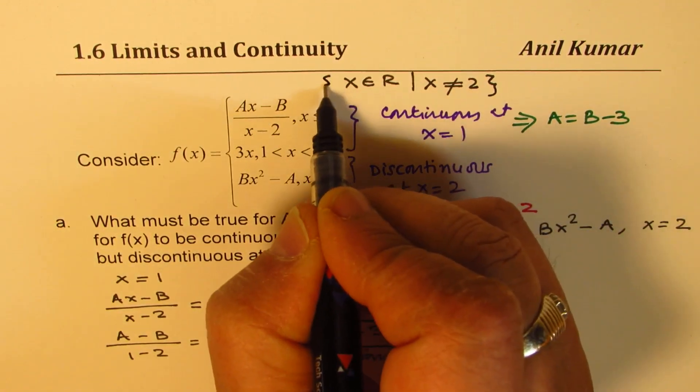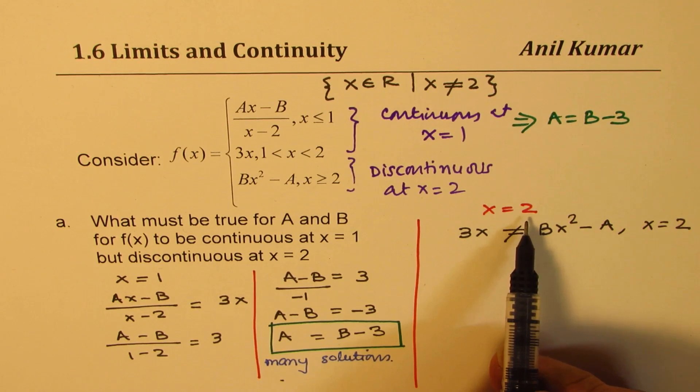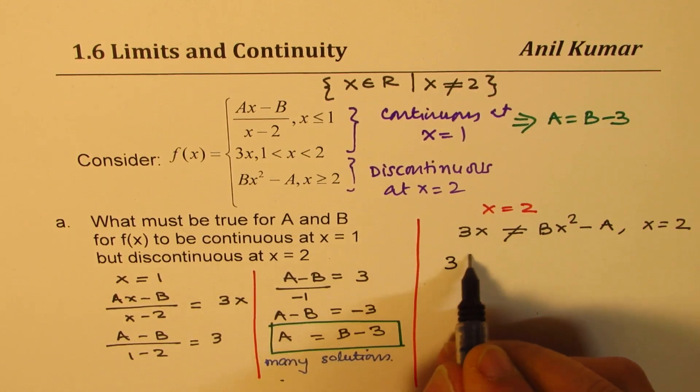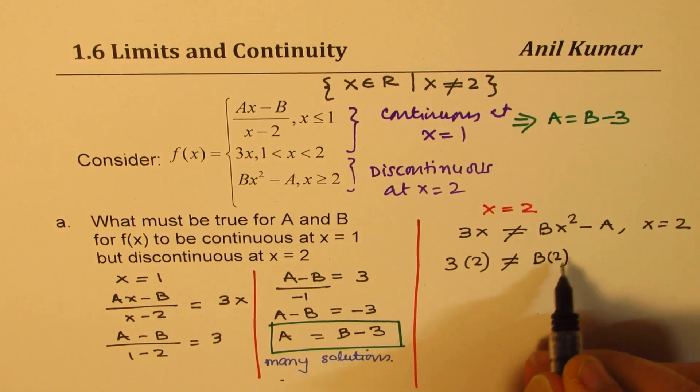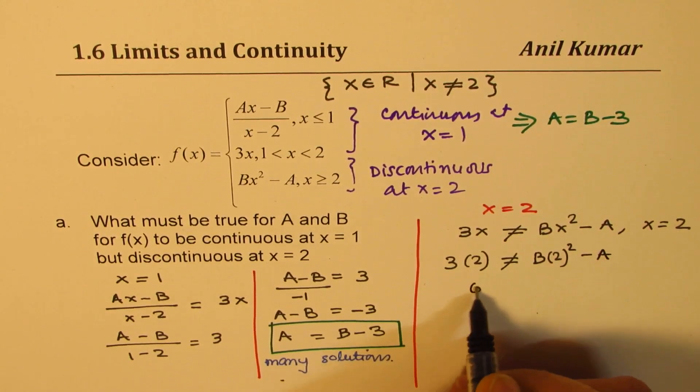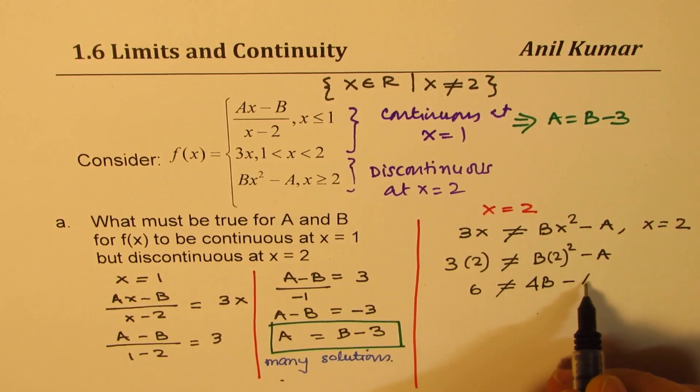Okay, let's solve this. Substituting the value 2 here we get 3 times 2 should not equal B times 2 squared minus A, or 6 should not equal 4B minus A.